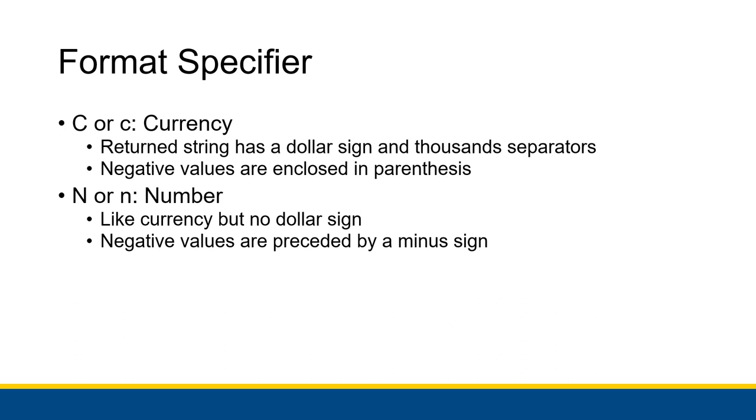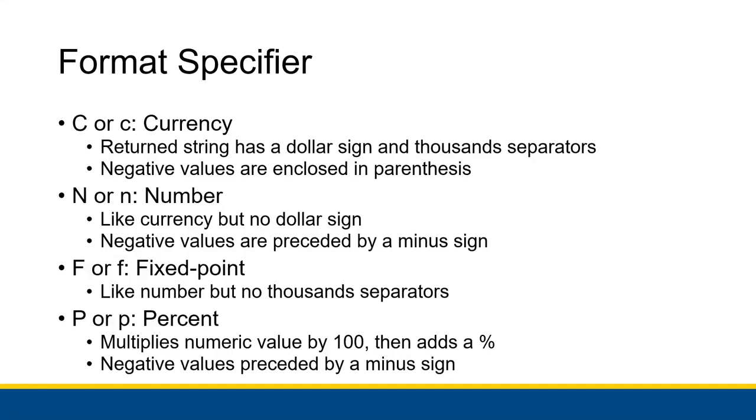F is for fixed point. It's like number, but there's no thousandths separator, the way that we type out numbers in Visual Basic normally. Specifying F allows us to specify how many decimal points are included in the result, if we want to round it to the hundredths place or something like that. And then there's percent, which multiplies the numeric value by 100 and adds the percent sign afterwards. Negative values are preceded by a minus sign. If you're trying to output a percentage, the percent format is really good for that.